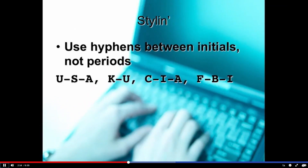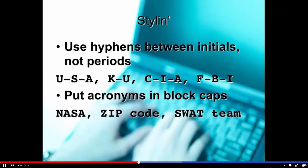We use hyphens between initials and don't put periods after them — so it's U-S-A, K-U, C-I-A, F-B-I. Please hyphenate those out. When we have an acronym — a set of initials we read like a word — we just put it in block caps: NASA, ZIP, SWAT team. Those don't get hyphens or periods — just block capital them.